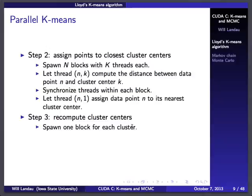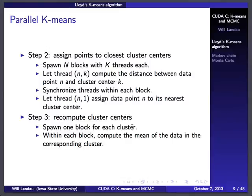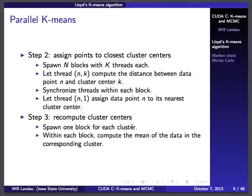Now we need to recompute the cluster centers — step three. Here's how you parallelize it: spawn one block for each cluster center. Within each block, compute the mean of the data in the corresponding cluster, and move that cluster center to be that mean. In step three you're working on K clusters independently, so you can do them in parallel very easily. The threads in the block compute the mean of the data within that cluster.